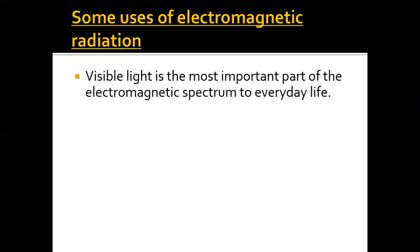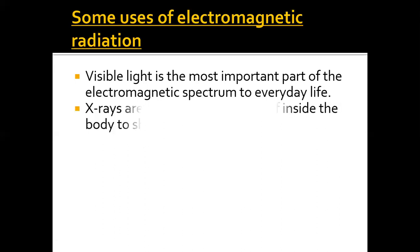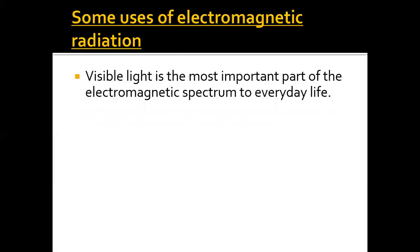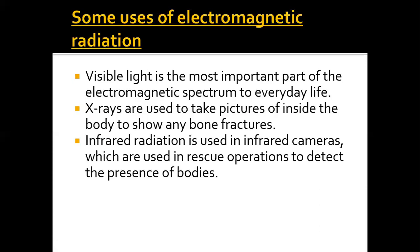There are several uses of electromagnetic radiation. First, visible light is the most important — without it, we cannot see anything. Second, x-rays are used to take pictures of the inside of the body to show bone fractures or problems, and also in airport security to detect dangerous or metallic objects. However, x-rays are dangerous and can cause cancer, so workers must protect themselves.